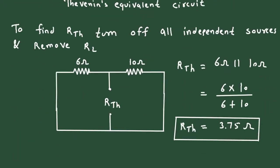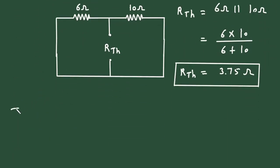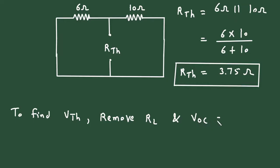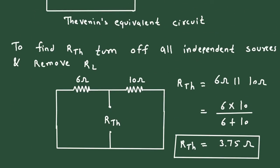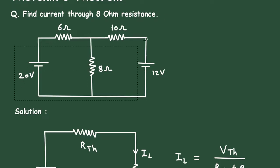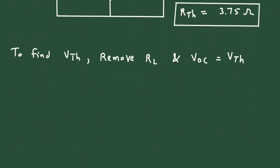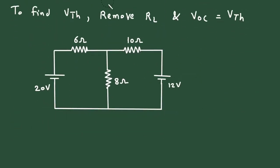Now next we have to find the value of Vth. To find Vth, first of all remove RL, and VOC — that is open circuit voltage — is equal to Vth. Here we remove this RL, and now this will be the open circuit voltage, or we can directly write this will be our Vth, positive here and negative here. So here we have to find this voltage.